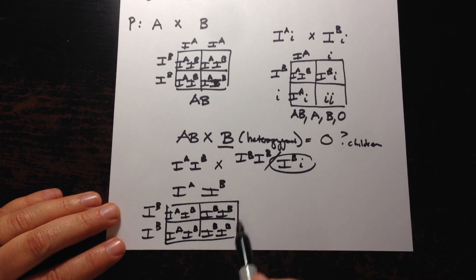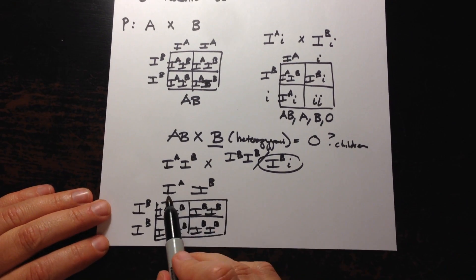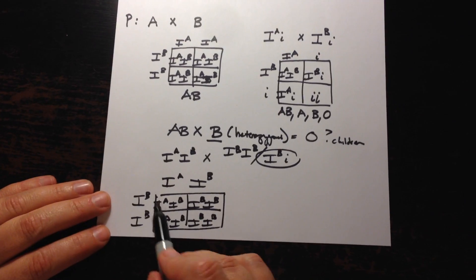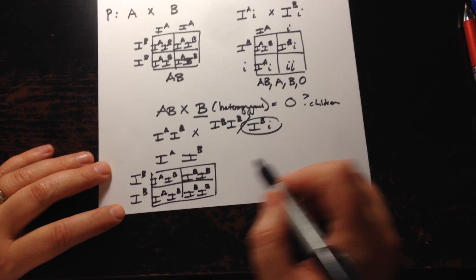So then this would not be possible, right? You would not be able to have a type O child if the one parent is AB and the other one is homozygous dominant for type B.